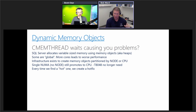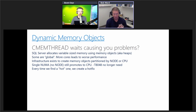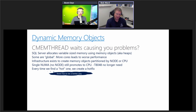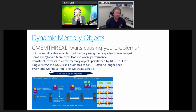We built infrastructure to automatically partition memory objects by node or CPU, but there's overhead to doing that, so we don't do it by default for all of them. We also built a mechanism where, if a memory object is already partitioned by node, you can promote it further using trace flag 8048. The problem was: customers would hit a scalability issue, we'd identify the culprit memory object, and we'd have to create a hotfix. We said there's got to be a better way — why can't SQL Server observe a problem and partition on the fly automatically?